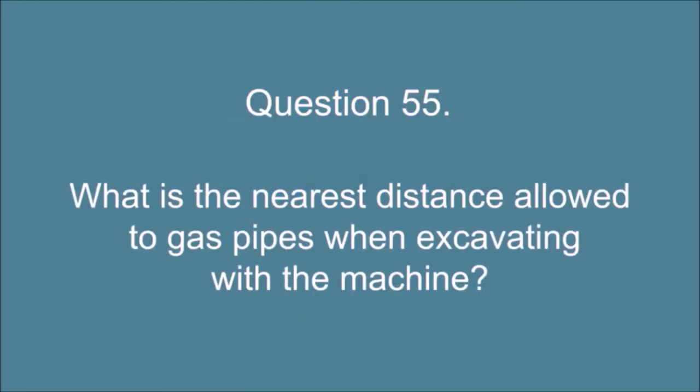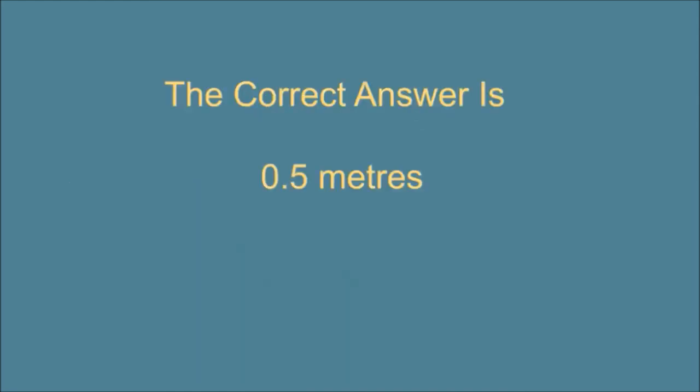Question 55. What is the nearest distance allowed to gas pipes when excavating with the machine? The correct answer is, 0.5 meters.